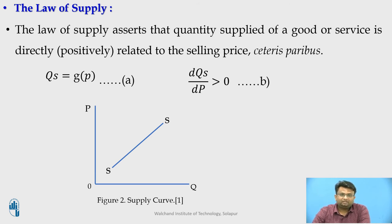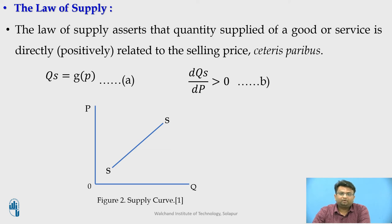Let us see the law of supply. As per the definition, the law of supply asserts that the quantity supplied of a good or service is directly proportional to its selling price, under the condition that all other determinants remain constant. Under conditions of short-run production, profit maximization, and perfect competition in resource markets, the law of supply is based on the law of diminishing marginal returns, sometimes called the law of diminishing marginal product. The supply curve of an individual firm is simply the portion of the firm's marginal cost curve that rises in response to diminishing returns. The law of diminishing marginal returns may be the only true law in economics, and it makes the law of supply a stronger relationship than the law of demand.